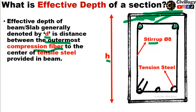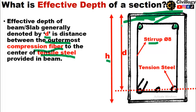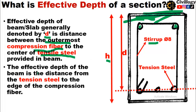Effective depth of a beam or slab, generally denoted by d, is the distance between the outermost compression fiber and the center of the tensile steel, as you can see here. If this is the center of the tensile steel, then this distance d is called the effective depth. It can also be described as the distance from the tension steel to the edge of the compression fiber.